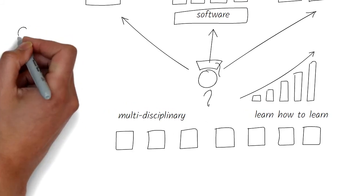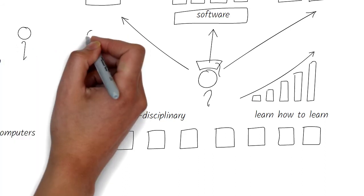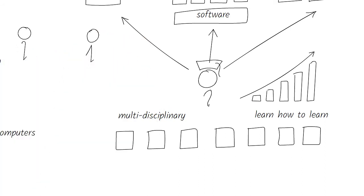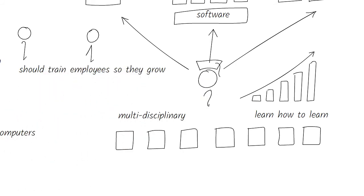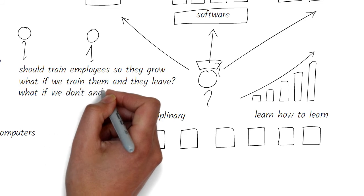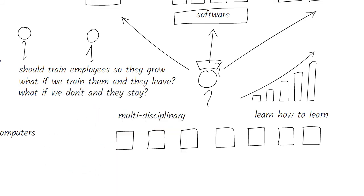This reminds me of a joke where two executives at a company are talking to each other and one tells the other, we should provide training to our employees so they can grow and perform better. To this, the other one replies, but what if we train them and they leave? And the first one responds, but what if we don't and they stay?